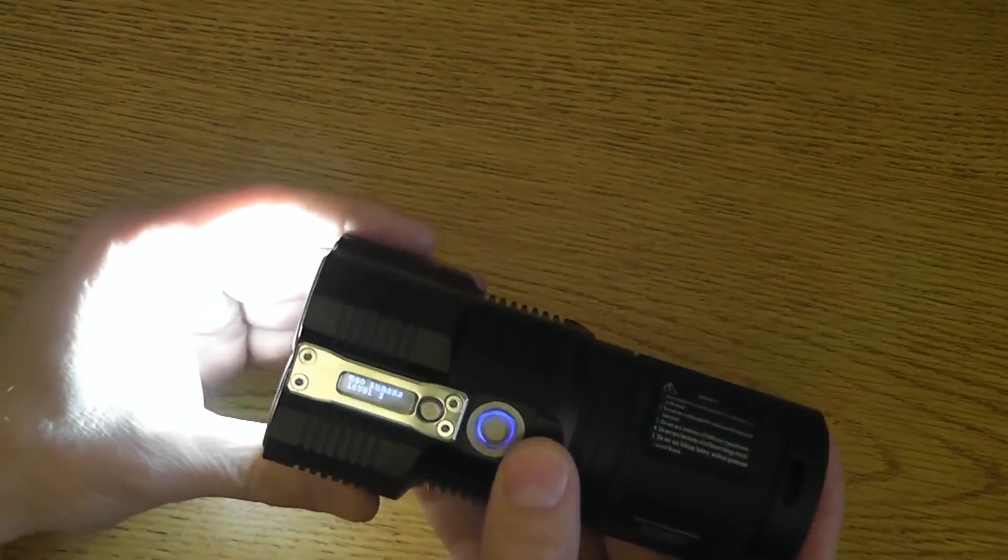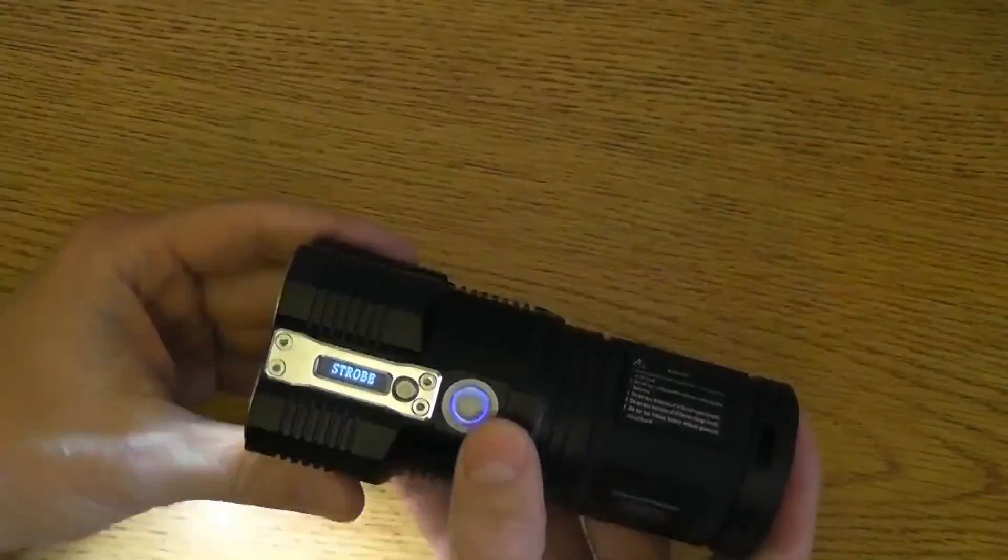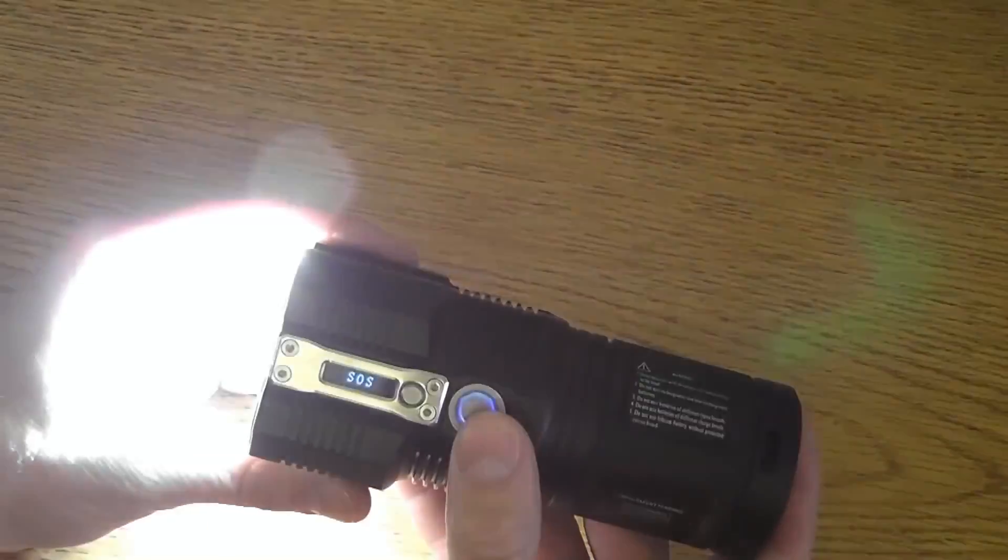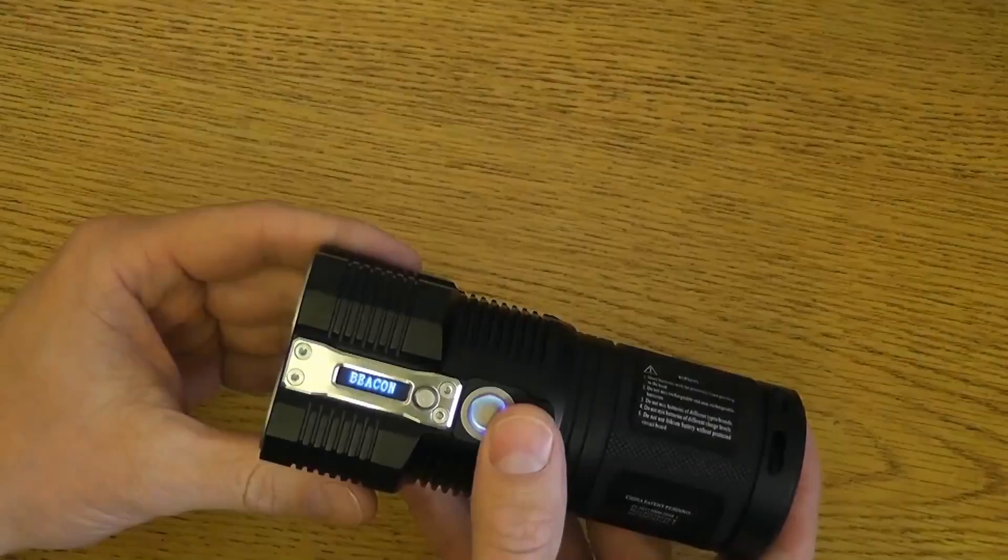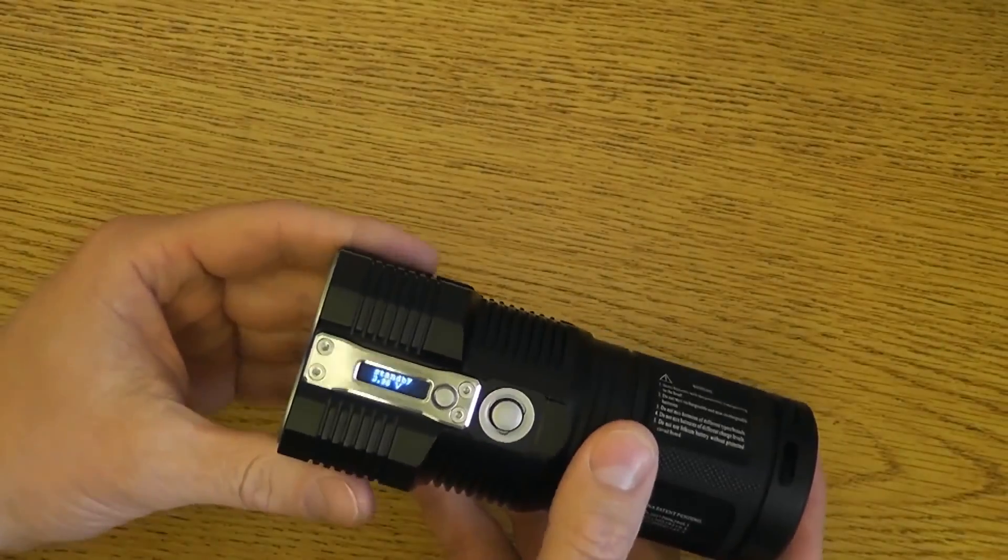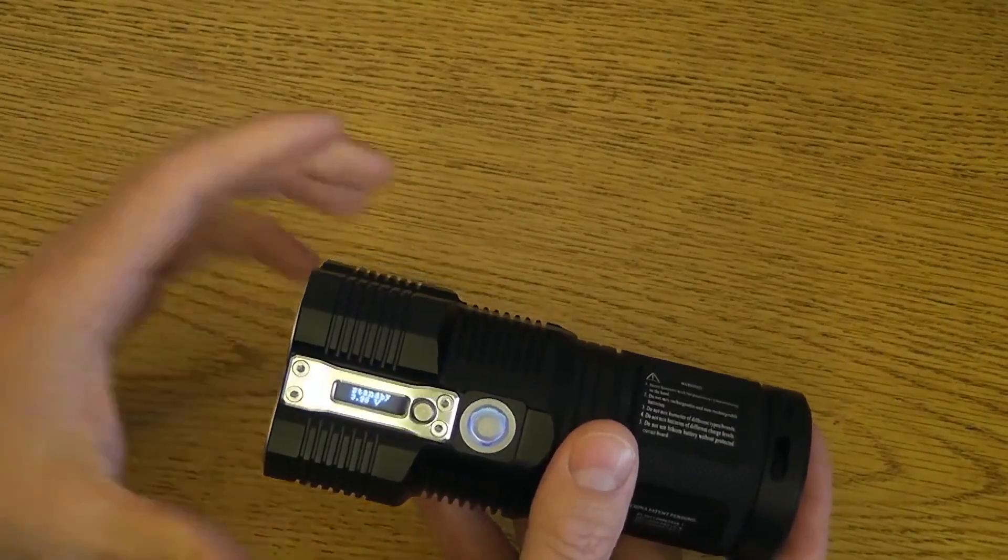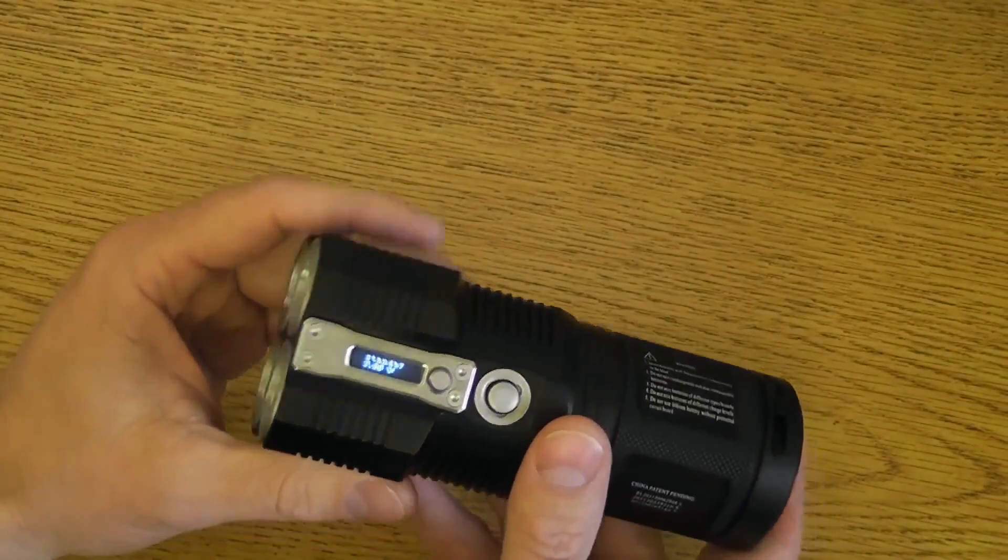Okay, from any mode, we can double click and we go to strobe. Half press from there, we go to SOS. Another half press, we go to beacon. Another press, it shuts it off. Or you can cycle through those three hidden modes again if you want to.